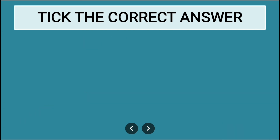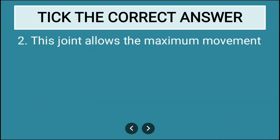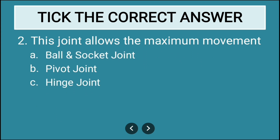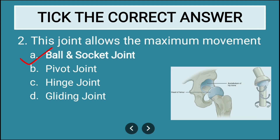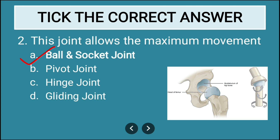Second question: This joint allows the maximum movement. Options are ball and socket joint, pivot joint, hinge joint, or gliding joint. The correct option is ball and socket joint, because this allows the maximum movement.